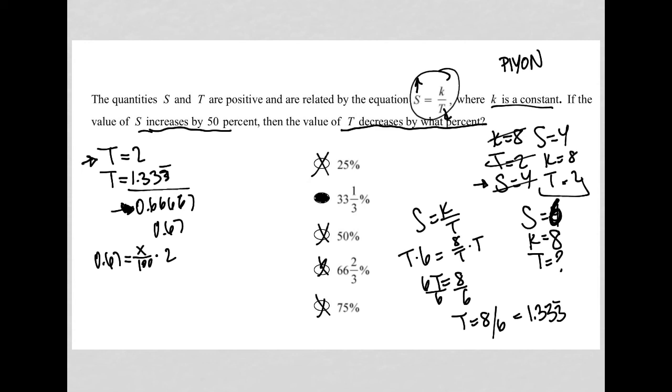So to simplify this, 2 goes into 2 once, 2 goes into 100 50 times. I have 0.67 equals 2x over 50. I'm sorry, just x over 50.